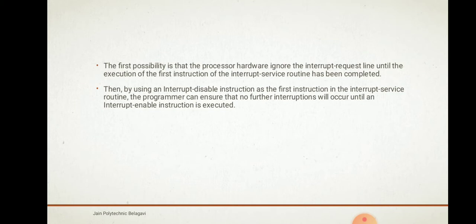By using an interrupt disable instruction as the first instruction of the interrupt service routine, the program can ensure that no further interrupt will occur until an interrupt enable instruction is executed. If we want to lock the second interrupt until interrupt one has finished executing, we write an interrupt disable instruction as the first instruction in the ISR of the first interrupt. This ensures no interruption occurs during the execution of that interrupt service routine.